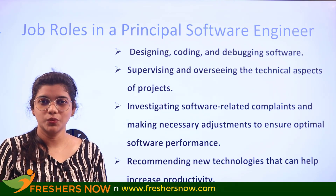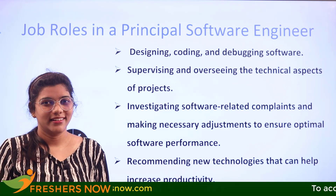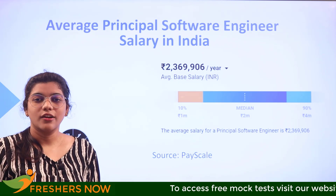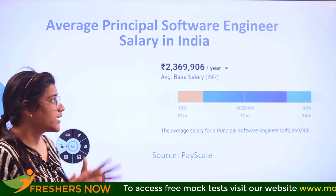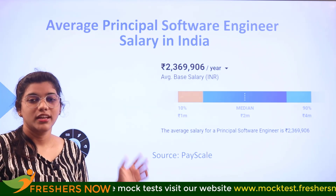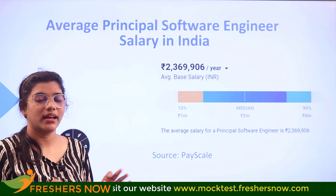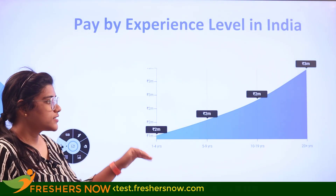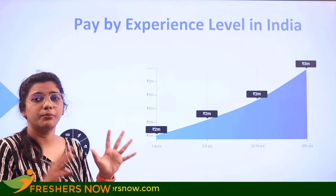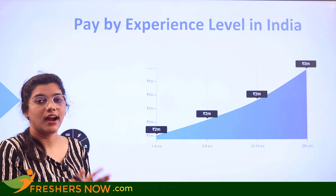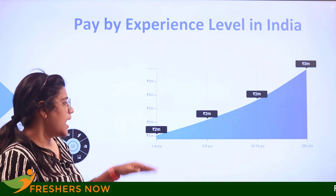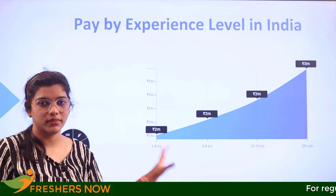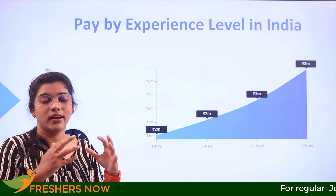We are now stepping into part two, which is going to answer your question: what is the salary of a principal software engineer? As per data by PayScale, the average salary of a principal software engineer in India is 23 lakhs 69,000 per annum. This gives you a brief perspective — when you start off your career and go year by year, from year one to year five this indicates around 2 million.